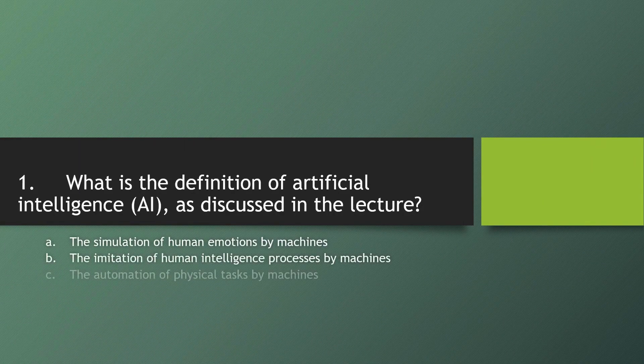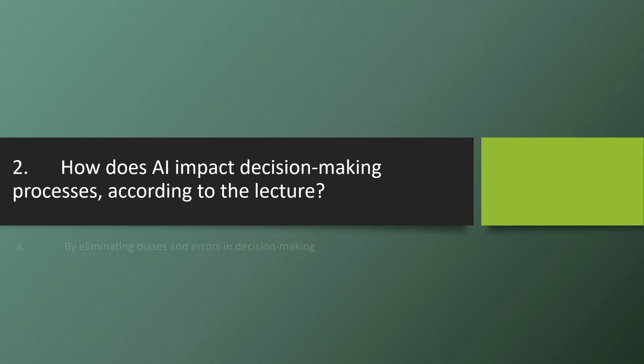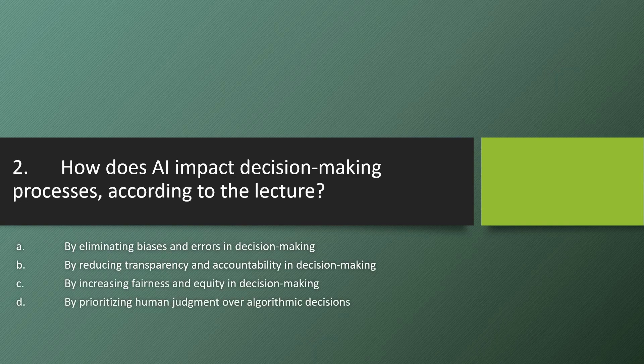Question 1: What is the definition of artificial intelligence as discussed in the lecture? Question 2: How does AI impact decision-making processes, according to the lecture?